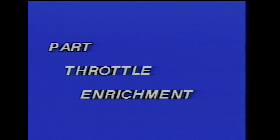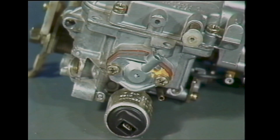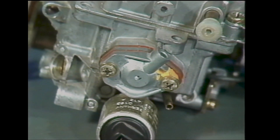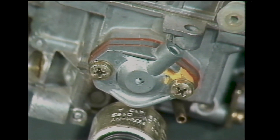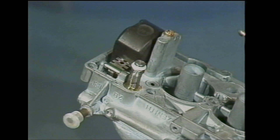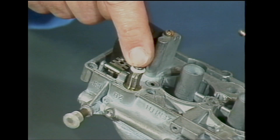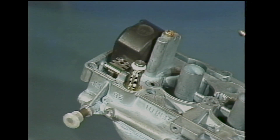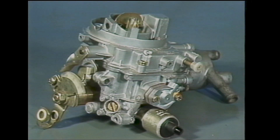The final refinement is that both carburetors are fitted with extra enrichment systems, known as part throttle enrichment. Both are depression operated — the 1B via a diaphragm unit, and the 2B via a piston and valve. To start with, let's take a look at the 1B diaphragm version.